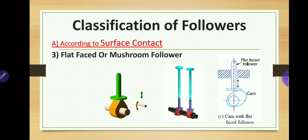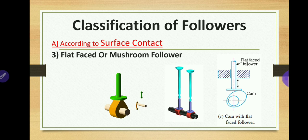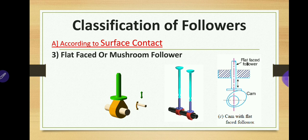Offsetting the follower axis is one method to reduce wear between the two contacting elements. When the flat faced follower is circular in shape, it is called a mushroom follower. As you can observe in the animation, the ends of the flat faced follower are circular, which is why they are called mushroom followers.